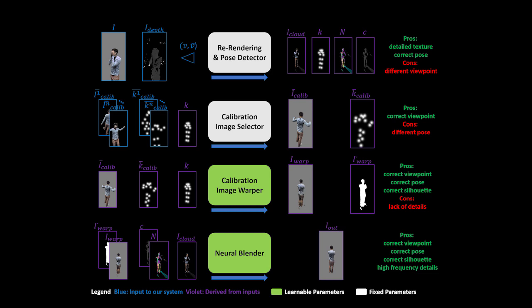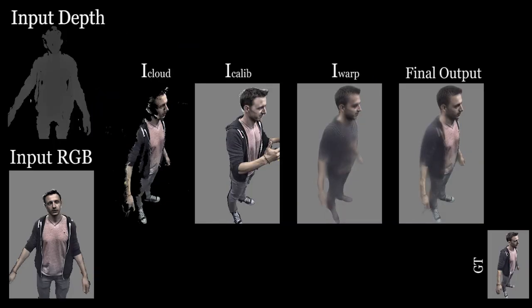Finally, a neural blender module blends the output of all the previous stages to form the final rendering. We now demonstrate the system in action.